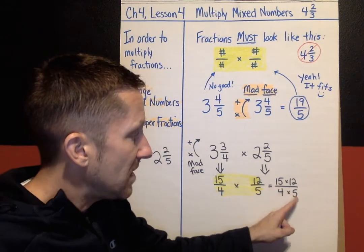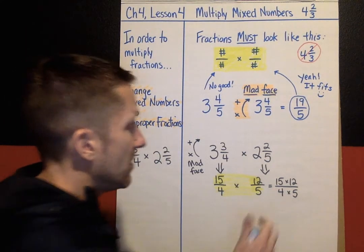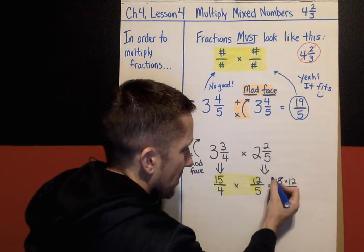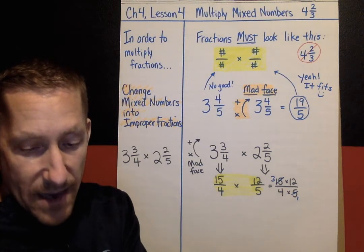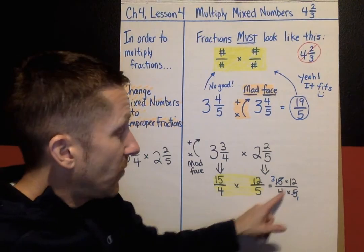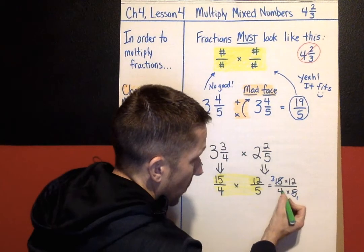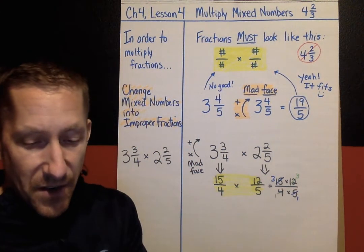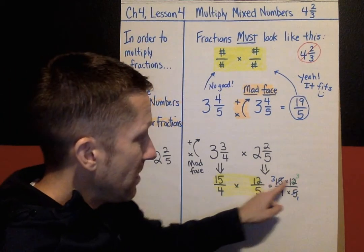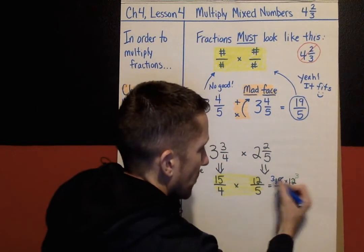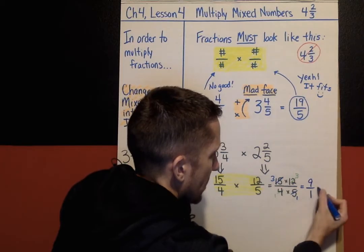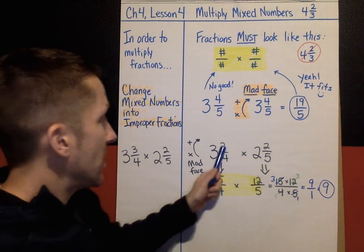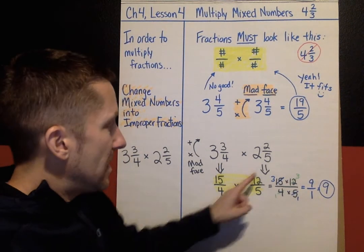I see that numerator 15 and denominator 5 share a common factor of 5 — so I divide: 5 divided by 5 is 1, and 15 divided by 5 is 3. I also see that 4 and 12 share a factor of 4 — 4 divided by 4 is 1, and 12 divided by 4 is 3. Now I'm doing 3 times 3 over 1 times 1 — that's 9 over 1, which simplifies to 9. So the answer to three and three-fourths times two and two-fifths is 9.